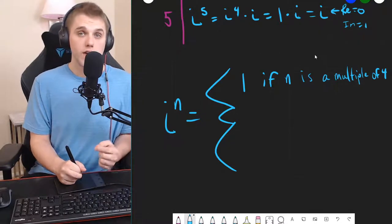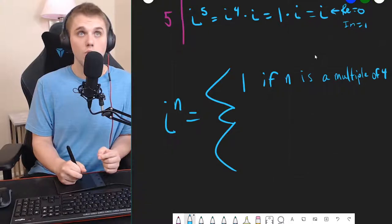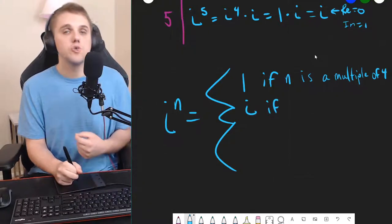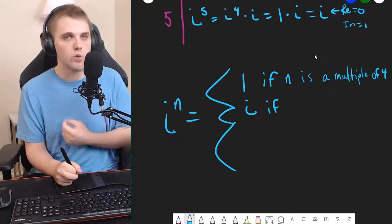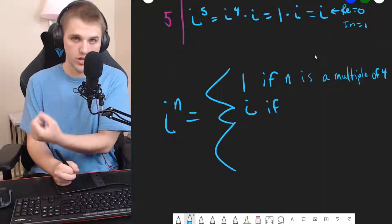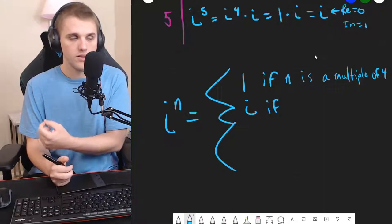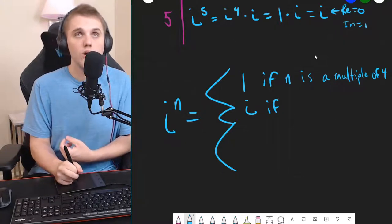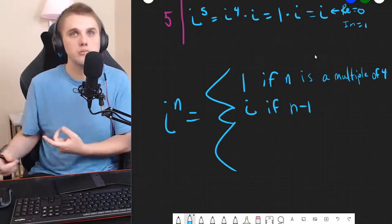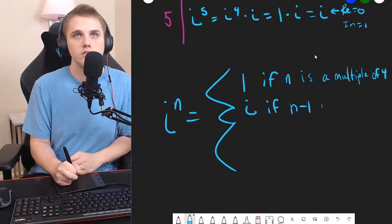And then for n equals 1, we get i as a result. But that is when n equals 1, or n equals 5, or n equals 9, or n equals 13. So, how do we represent those numbers? Well, if we just take that number and we subtract 1, then we're back to a multiple of 4. So, n minus 1 is a multiple of 4.